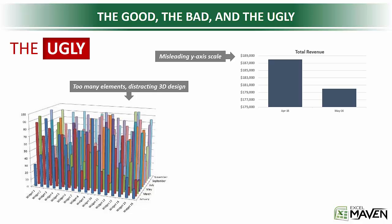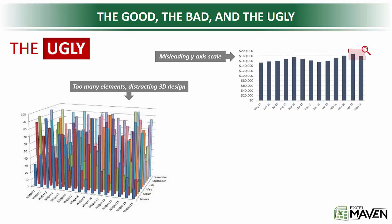Next up, we have what seems to be a really simple chart, which is total revenue April versus May. If I asked you to tell me what happened month over month, you might be tempted to say it's pretty clear that revenue plummeted in May. My response would be: take a look at the y-axis, because the minimum is 175K and the maximum is only 189K, which means we're looking at a pretty thin slice of the data here. And in fact, when you zoom out, that story completely changes in the context of the bigger picture.